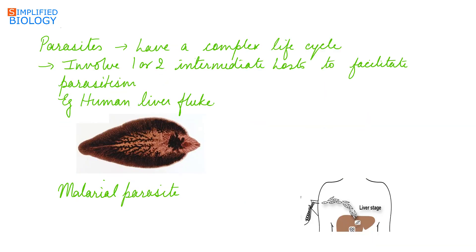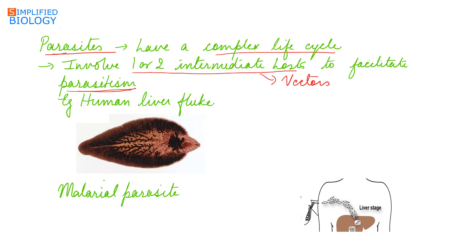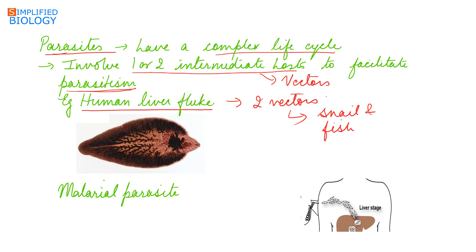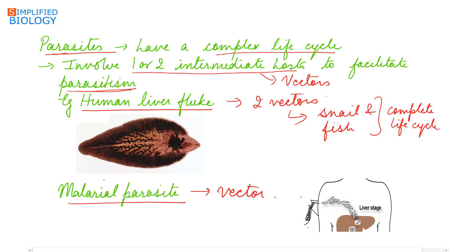Parasites have a complex life cycle. They may involve one or two intermediate hosts, also known as vectors, to facilitate parasitism to a specific host. For example, the human liver fluke depends on two vectors: a snail and a fish, to complete its life cycle. Another example is the malarial parasite, which needs a vector — the mosquito — to spread the parasite to other hosts.